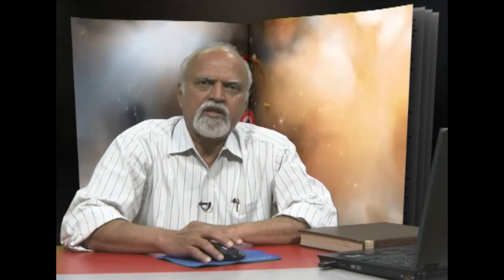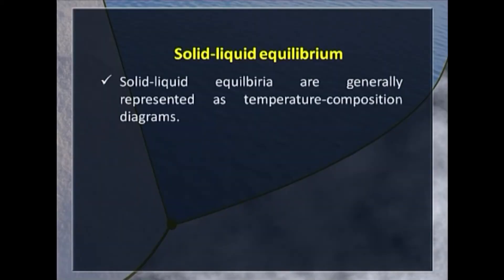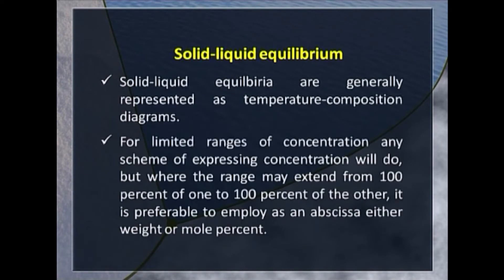So in simplified form, we have to simply put the value of P to get the number of degrees of freedom applicable to the given system. Solid-liquid equilibria are generally represented as temperature composition diagrams, the so-called T-C diagrams. In these diagrams, if you have to express concentration, we can use any scheme of presentation of concentration. But if you have to deal with systems in which the composition varies from 100 percent of A to 100 percent of B, the components are A and B in the scheme, then it is better to use either weight percent or mole percent.